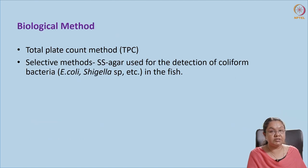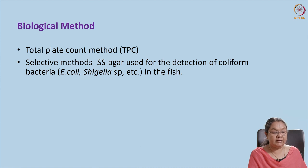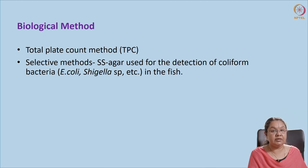For biological methods, we can test the total plate count (TPC), which is the first test usually done to identify the total count of bacteria. We can also go for detection of individual bacteria using selective media if a particular microorganism is suspected. Usually in such cases we identify E. coli, Shigella, and other coliforms or fecal coliforms, which indicate bacterial spoilage.